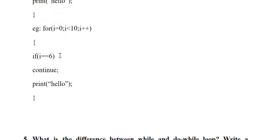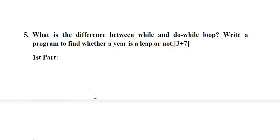For the continue statement, consider 'for(i = 0; i < 10; i++)' where if i equals 6, continue. This means when i equals 6, the print statement is skipped for that particular iteration. For i = 0 to 5 and i = 7 to 9, 'Hello' is printed normally, but for i = 6 it is skipped. The continue statement skips only that one iteration for the specified condition.